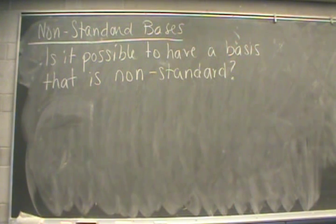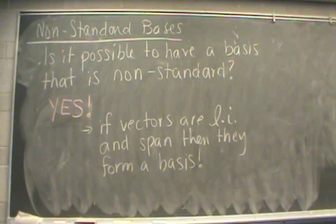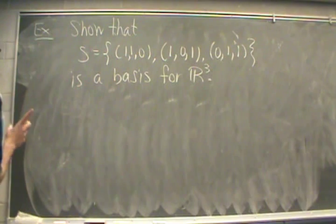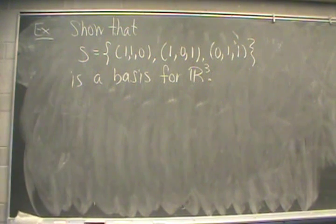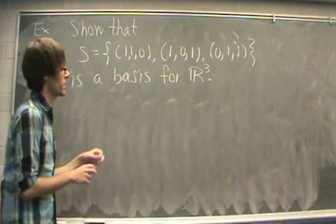This is the question that I would like to discuss next: Is it possible to have a basis for a vector space that is non-standard? The answer is definitely yes. If the vectors in a particular set that you suspect to be a basis are linearly independent and they span the vector space, then they're definitely a basis. So what we're going to do is show that this collection of three vectors here forms a basis for the real vector space R^3.